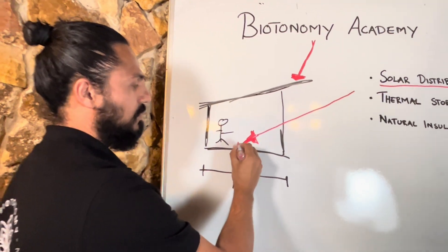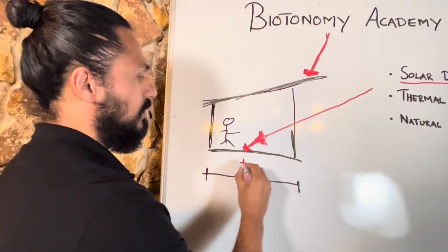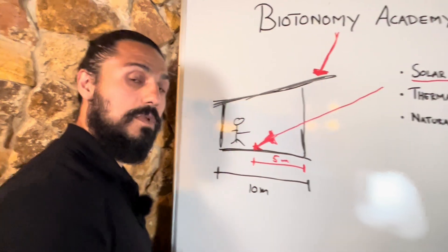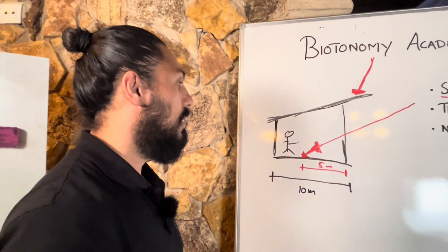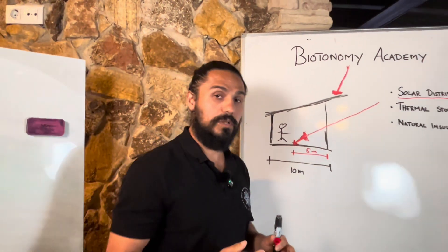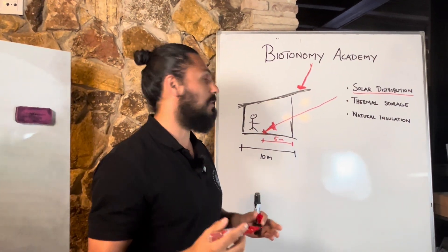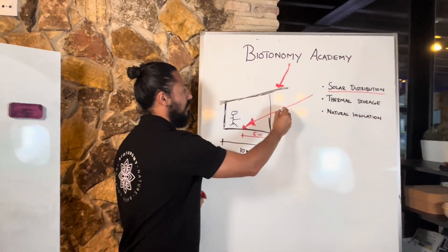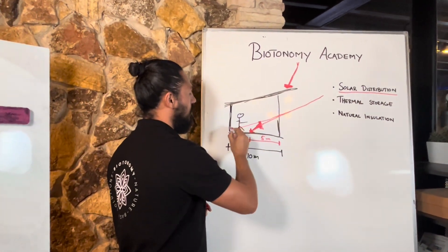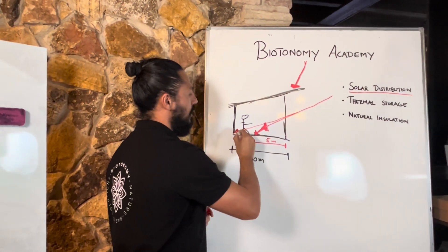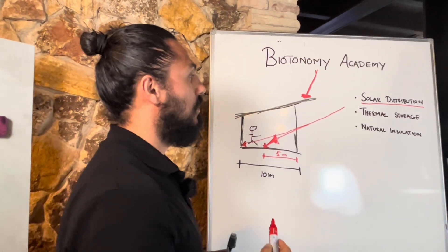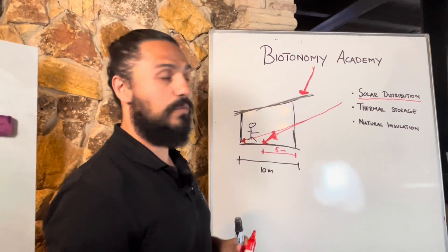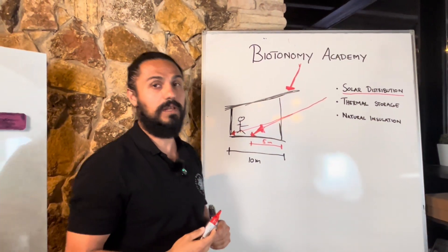So if you do your sun study and you see well you just get it to come in halfway which is five meter. Now if you're in a really cold climate what you want to achieve and aim for is that you want the sun to actually reach all the way to the back, because that's very much related to the next concept which is thermal storage that I'm going to tell you all about.